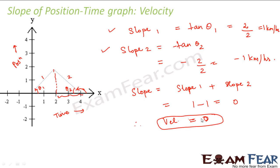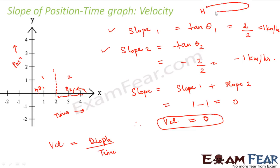Why does velocity become 0? We can prove the same thing without the graph. Velocity = displacement / time. In this case, the boy starts from home, goes to McDonald's, and comes back to home. Since the initial and final positions are the same, displacement = 0. Therefore velocity = 0 / time = 0. The velocity is 0 because the displacement is 0.